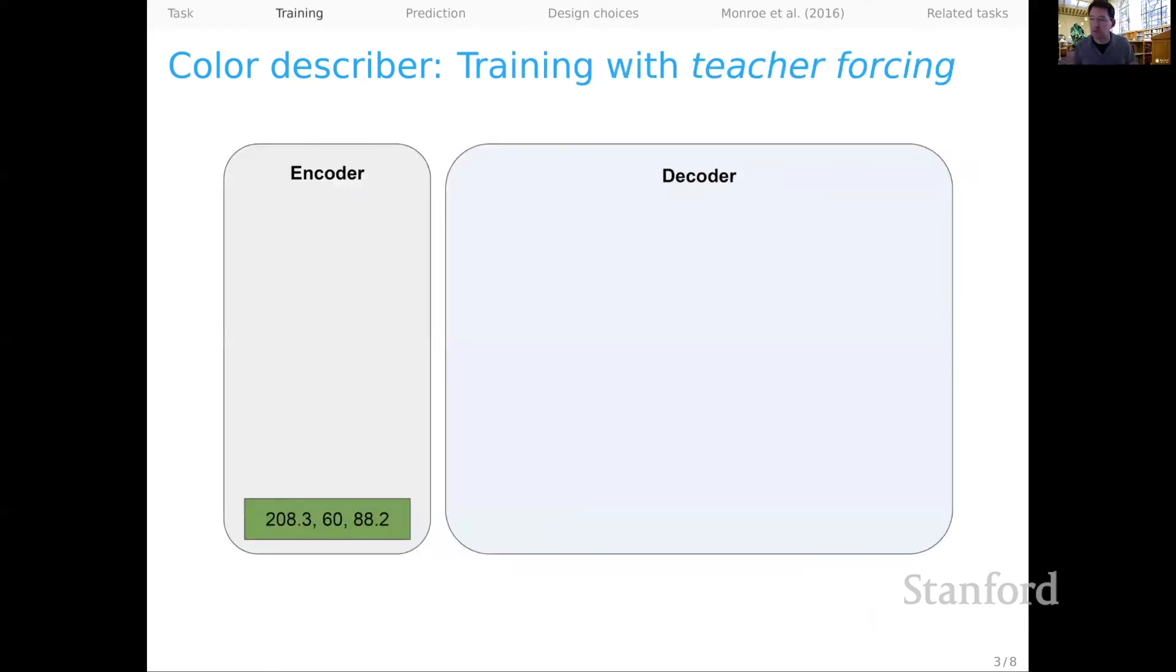So our speakers, at least our baseline speakers, are standard versions of encoder-decoder models. We're going to have for this initial formulation a very simple encoder. The task of the encoder is simply to take a color representation, which is going to be a list of floats, embed it in some embedding space, and then learn some hidden representation for that color, and that's all that needs to happen. So it's just one step.